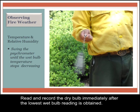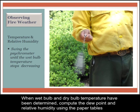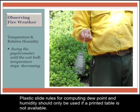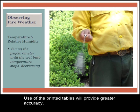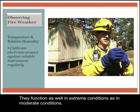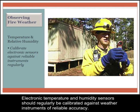When the wet bulb temperature ceases descending, the correct value has been reached. Read and record the dry bulb immediately after the lowest wet bulb reading is obtained. When wet bulb and dry bulb temperatures have been determined, compute the dew point and relative humidity using the paper tables included with the kit. Select the appropriate table for the altitude range corresponding to the observation site. Plastic slide rules for computing dew point and humidity should only be used if printed tables are not available; use of the printed tables will provide greater accuracy. Well-maintained sling psychrometers are still the most accurate, durable, and reliable indicators of temperature and moisture. Electronic temperature and humidity sensors should regularly be calibrated against weather instruments of reliable accuracy.